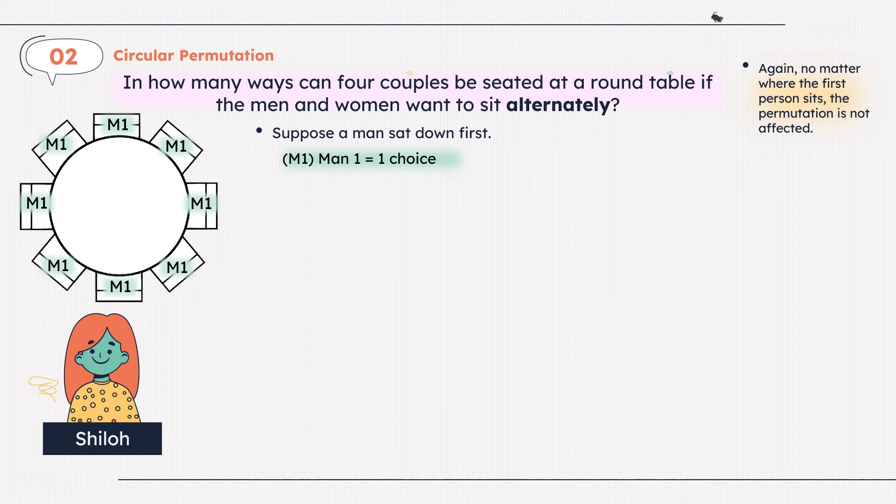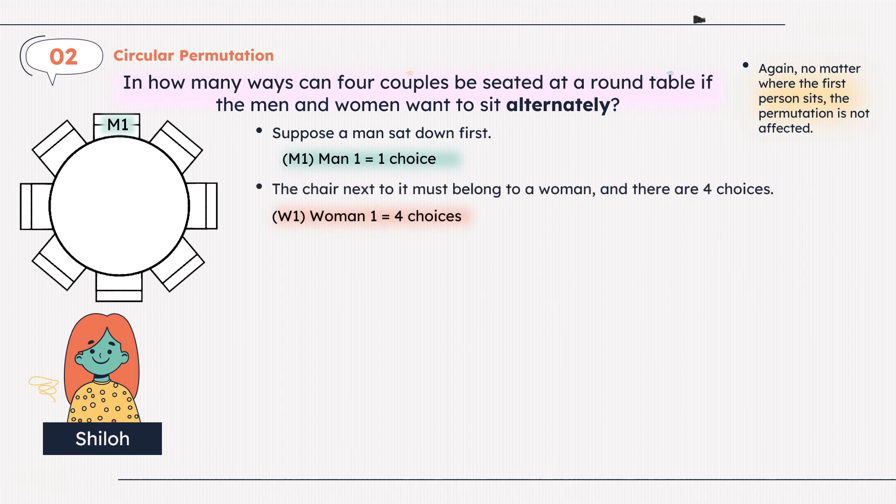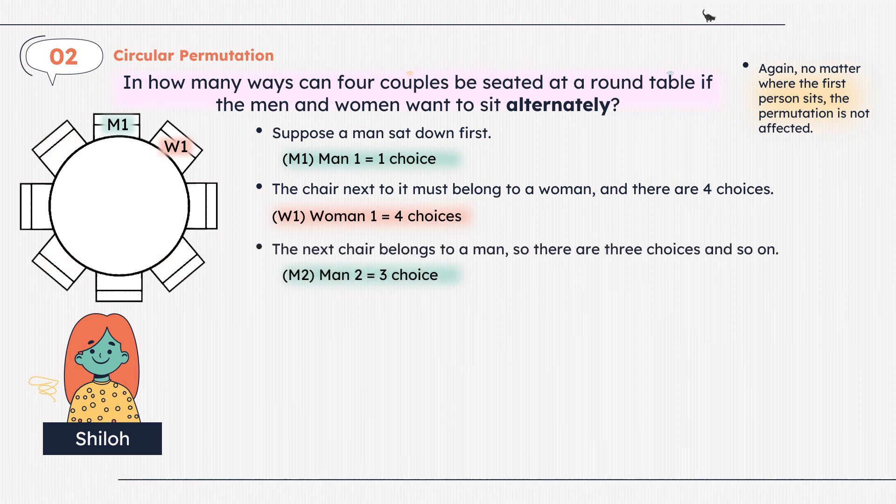If man 1 sat on the top seat, the chair next to it must belong to woman, and there are 4 choices. Since men and women have to sit alternately, woman 1's choice of seat cannot be next to each other. So she has 4 choices. Let's say woman 1 sat on the top right seat. The next chair belongs to a man, so there are 3 choices left. If man 2 sat at the right seat, the chair next to it must belong to woman, and the process goes on and on until all the seats are taken by men and women alternately.